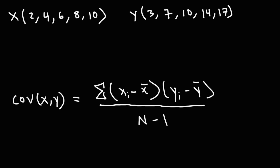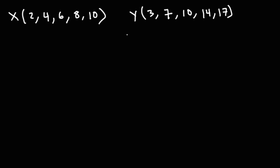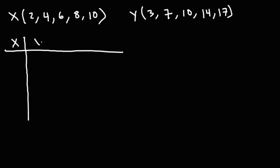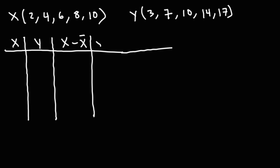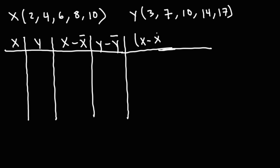That's the formula you need to calculate the covariance between x and y. Let's talk about how to use this formula with the use of a table. In the first column, I'm going to put all of the x values. In the second column, I'm going to place the y values. Then the difference between the x values and the mean, the difference between the y values and the mean, and finally the products of those two difference columns.